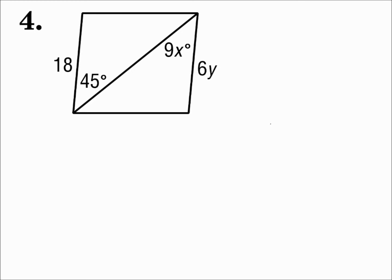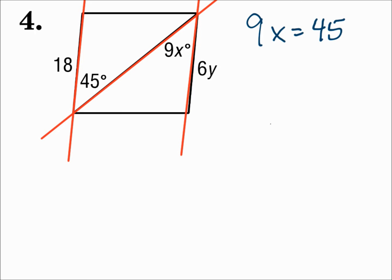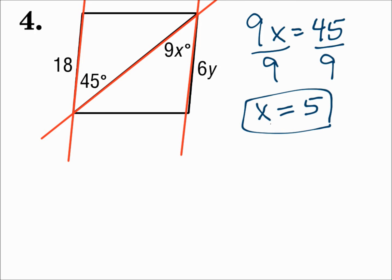For number 4, we're given one pair of opposite sides and a pair of alternate interior angles. If they give you alternate interior angles, they're going to be talking about parallel lines. Remember: if one pair of sides is both congruent and parallel, then it's a parallelogram. Consider the two lines cut by a transversal — those alternate interior angles need to be the same. Start with the alternate interior angles: 9x equals 45. Divide both sides by 9, and x is 5. That makes the two opposite sides parallel.